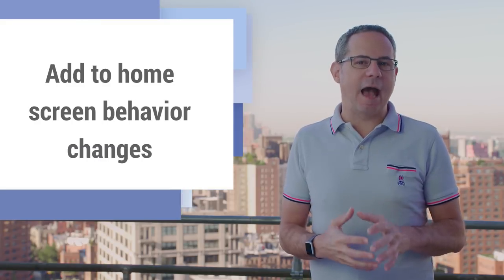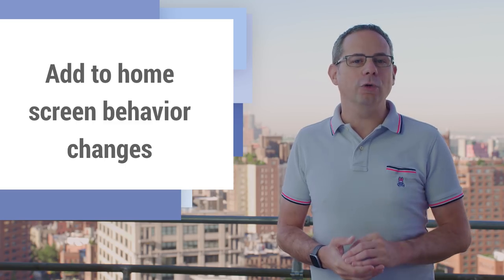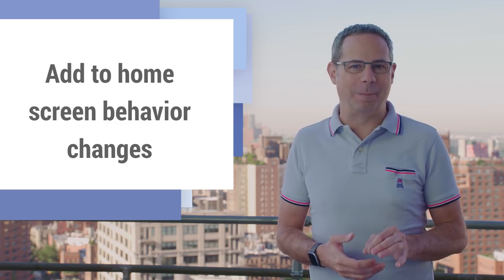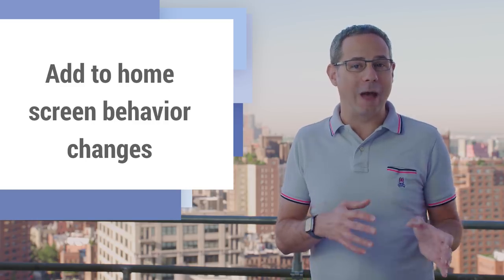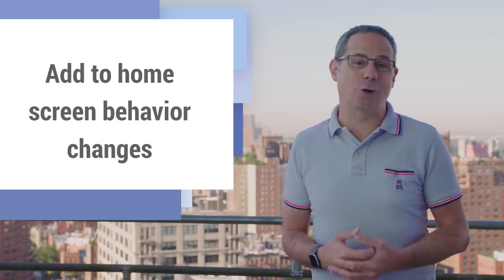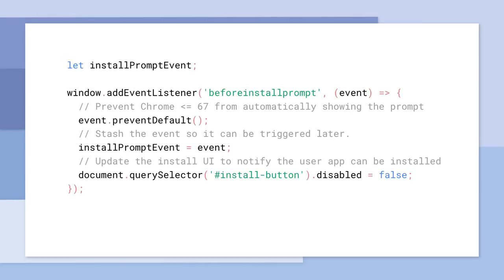If your site meets the ADD TO HOME SCREEN criteria, Chrome will no longer show the ADD TO HOME SCREEN banner. Instead, you're in control over when and how to prompt the user. To prompt the user, listen for the BEFORE INSTALL PROMPT event. Then save the event and add a button or other UI element to your app to indicate that it can be installed.